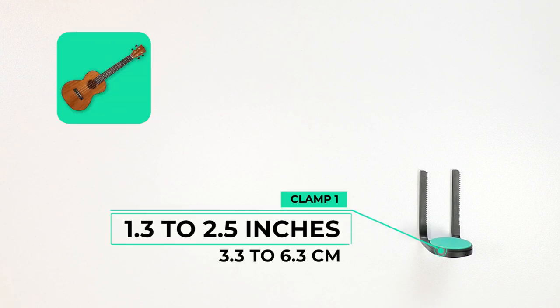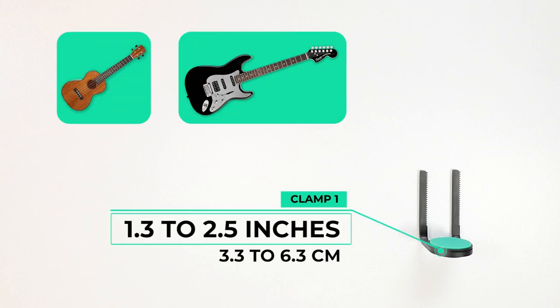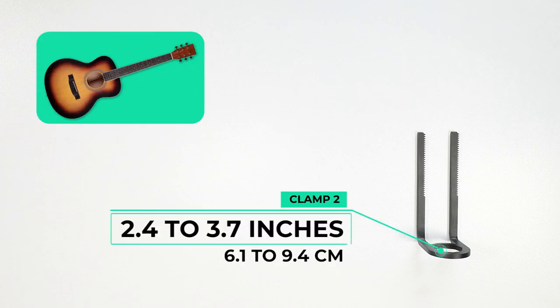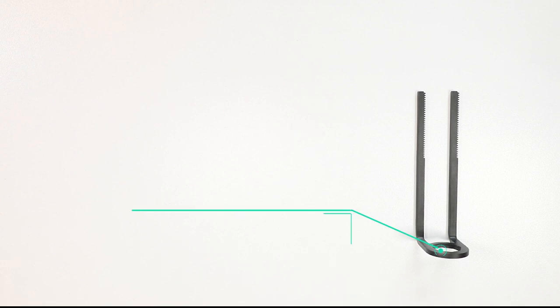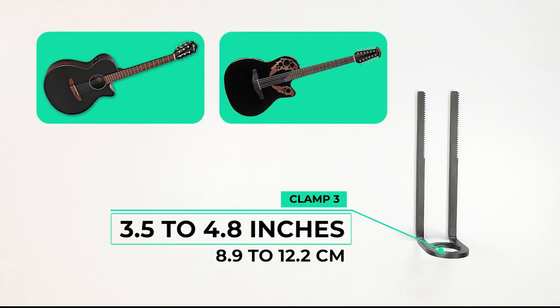Clamp 1 will fit instruments from 1.3 to 2.5 inches wide. Clamp 2 will fit instruments 2.4 to 3.7 inches wide. And clamp 3 will fit instruments 3.5 to 4.8 inches wide.